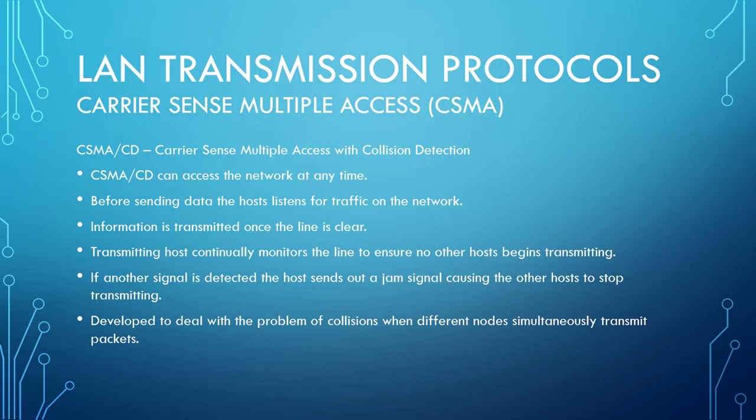CSMA/CD operates differently. Before sending data, the host listens for traffic on the network and only transmits once the line is clear. The transmitting host continuously monitors the line to ensure no other host begins transmitting. If a signal is detected, a jam signal is transmitted, causing other hosts to stop transmitting. CSMA/CD was developed to deal with collision problems when different nodes try transmitting simultaneously.